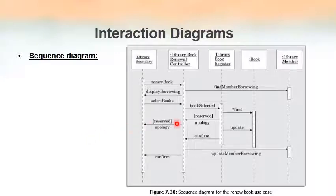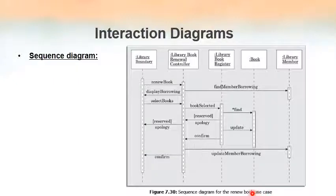This is an example of a sequence diagram for the 'renew book' use case. One important point: each sequence diagram is an interaction diagram, and each interaction diagram shows the behavior of a single use case. So this sequence diagram highlights only the behavior of the use case named 'renew book'.